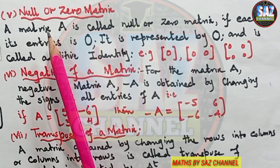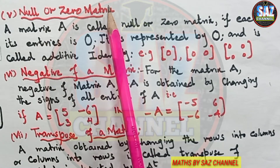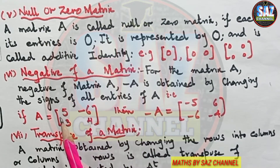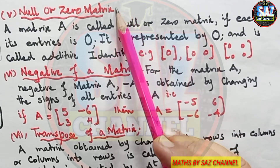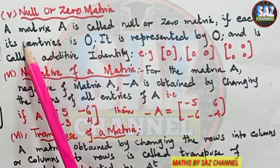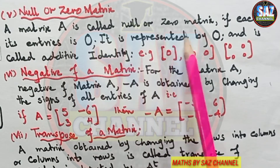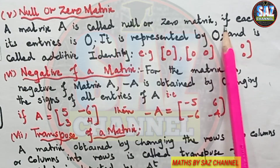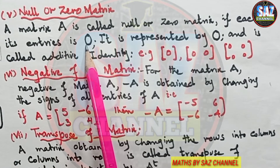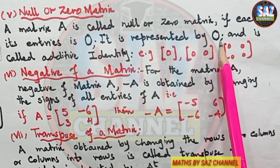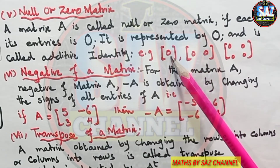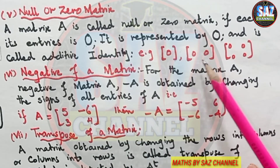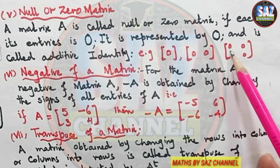Next is the null or zero matrix. It is denoted by the letter O. A matrix A is called the null or zero matrix if each of its entries is zero. It is called the additive identity matrix. For example, a single zero is a 1×1 null matrix, [0 0] is a 1×2 null matrix, and a 2×2 null matrix has all zero entries.